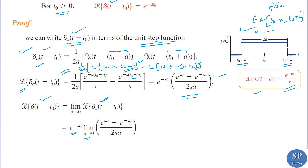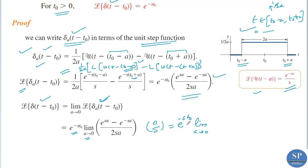Applying this limit directly as a → 0 gives (e⁰ − e⁰) / 0 = (1 − 1) / 0 = 0/0, which is an indeterminate form. So we apply L'Hôpital's rule, differentiating both numerator and denominator separately with respect to a.